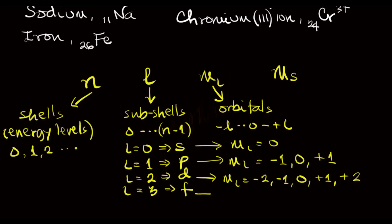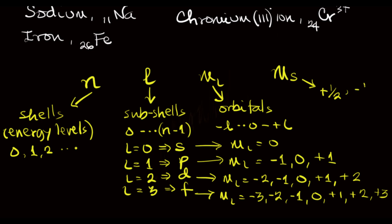And when L is 3, M sub L ranges from minus 3, minus 2, minus 1, 0, plus 1, plus 2, and plus 3 — that's 7 orbitals in the f subshell. The spin quantum number M sub S shows how the electrons will be positioned in the orbital, and has only two values: plus half and minus half. Its values do not depend on the other quantum numbers.